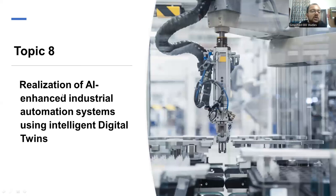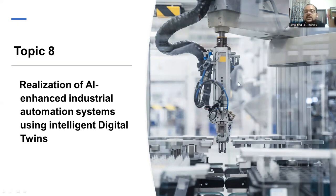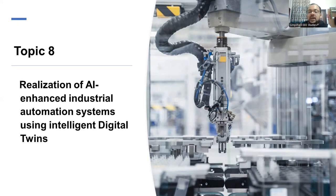Topic number eight is the realization of artificial intelligence enhanced industrial automation systems using intelligent digital twin. Digital twin is a special type of topology and networking. The importance of AI in industrial automation — how it helps in industrial automation — is the core focus. This topic is very useful especially for circuit branches like electrical and electronics, and even mechanical students can go ahead with this topic. You must have studied about PLC and SCADA based automation — you can make a detailed comparative study of those automation systems with respect to AI based systems. There is scope for comparative analysis between PLC/SCADA versus AI.